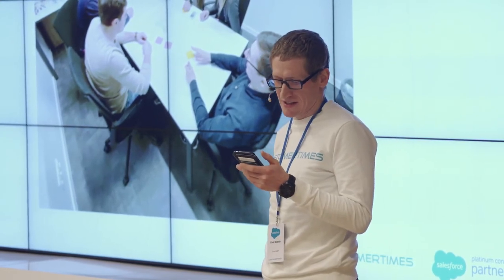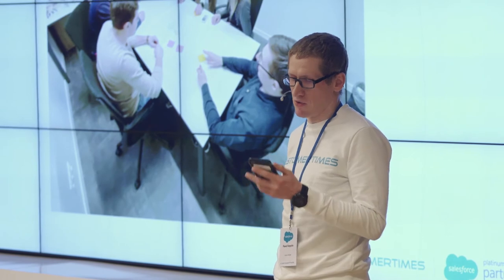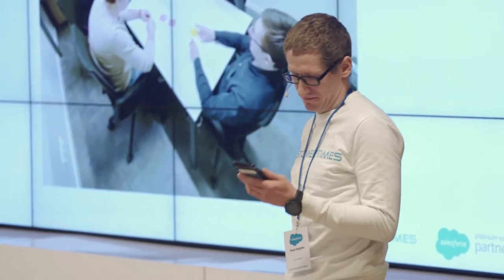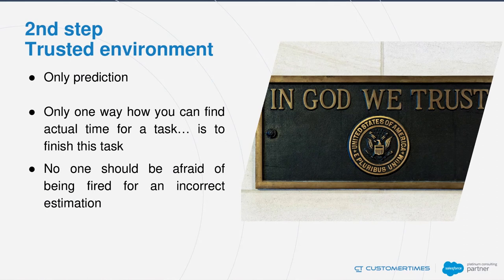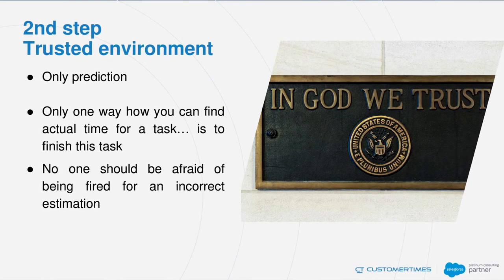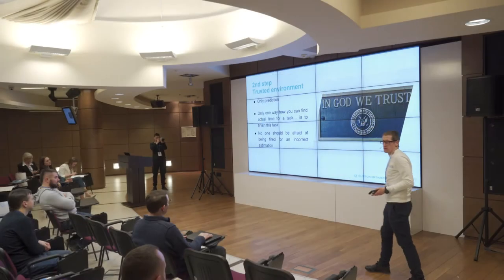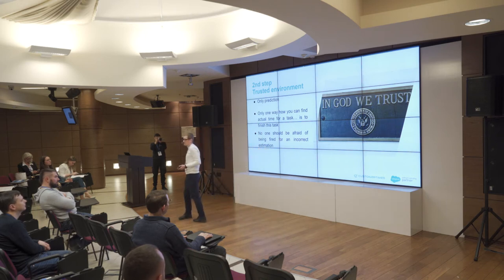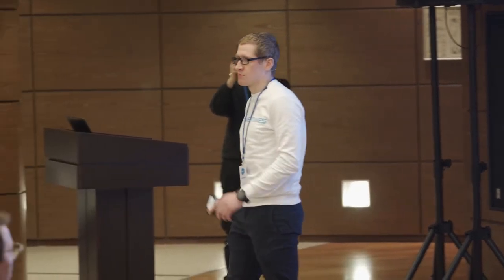If other team members didn't participate in the estimation process, they usually don't agree with the plan. So if the team is not on time with delivery, it becomes only your problem. The second step is creating a trusted environment. It's very hard to make a commitment when you are not sure about the amount of work — for example, if the user story is not groomed properly, or you are a junior developer, or you have had problems with planning previously.